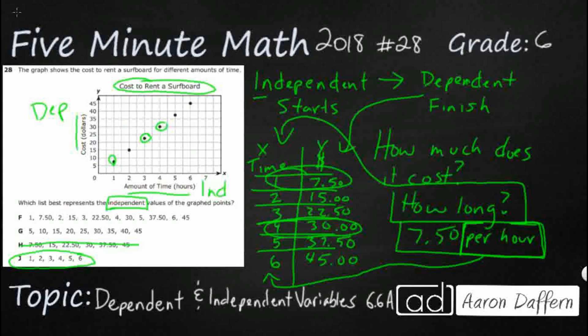So that's at least a good guess. H, F, and G, these are just random numbers. They make no sense. The answer is J.